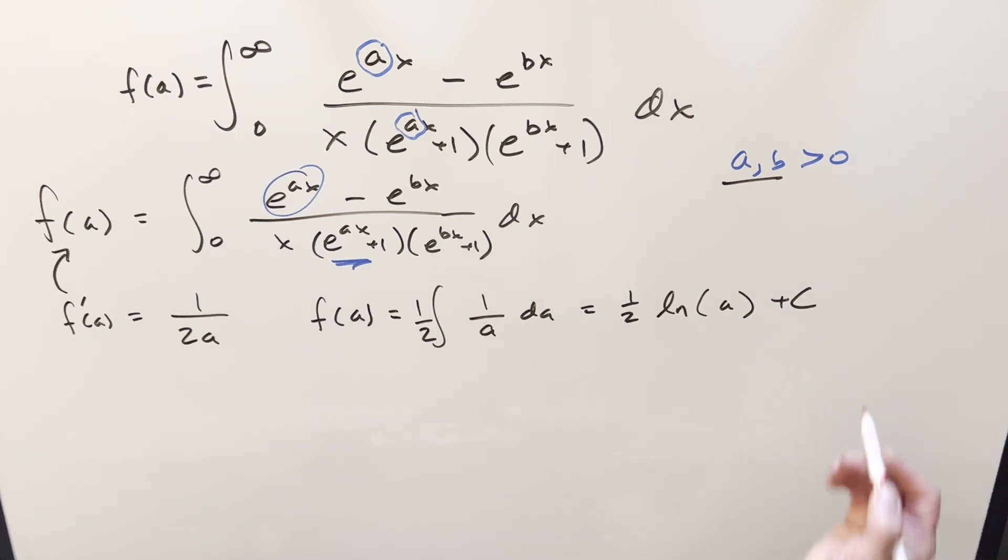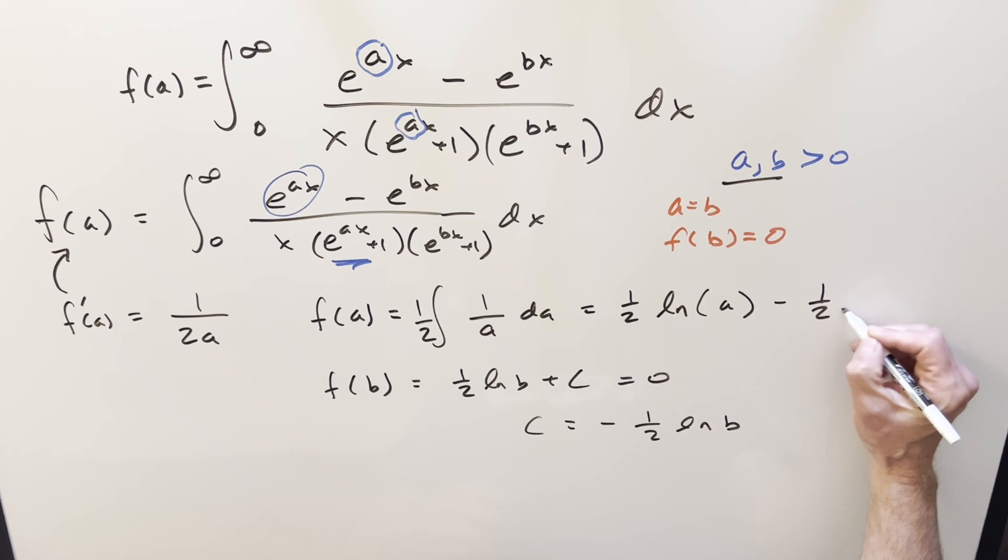And at this point, we just need to know what is this plus c. So we just needed a convenient point to evaluate this at. Just notice when a equals b, then what's going to happen is then the numerator becomes zero. So our f of b value, if we just plug that in, that's going to be zero. So you can probably see how it's going to work, but I can just plug in b here, and we get half ln b plus c equals zero. So that means our c is minus half ln b. So putting this back together, if that's our constant, I can just plug this in minus one half ln b.